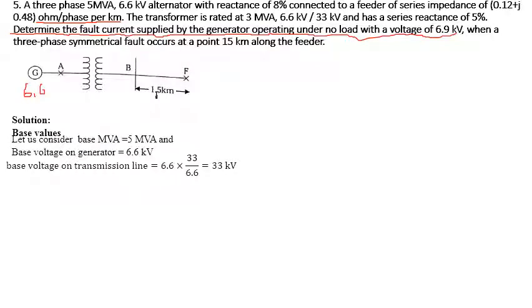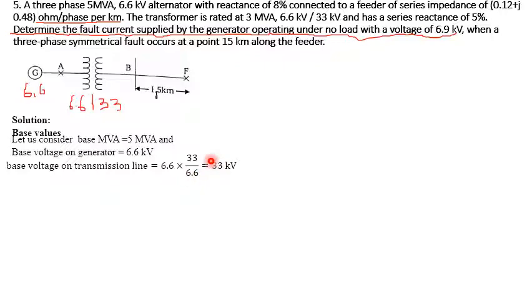Then we have to calculate the voltage on the transmission line side. The transformer rating is 6.6 kV / 33 kV, so the base voltage on the high-voltage side equals the low-voltage base of 6.6 kV multiplied by the transformer turns ratio: 6.6 × (33 / 6.6) = 33 kV. So the new base value on the transmission line side is also 33 kV.